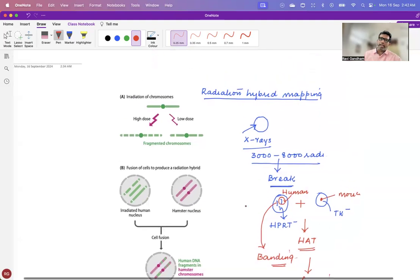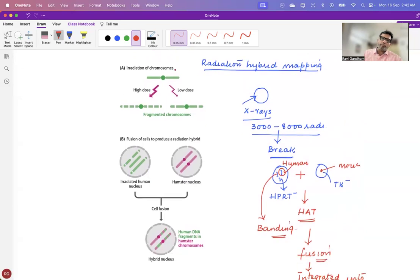So we'll look at the diagram here. What have we done? We have taken chromosomes, we can use high dose and low dose, and now we have fragmented chromosomes. When you have used a high dose, there'll be more number of fragments. When you have a low dose, you'll have a lesser number of fragments.